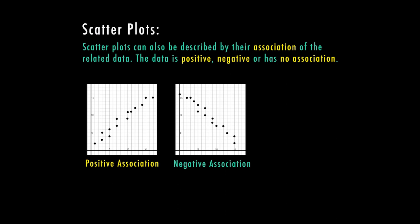So this one in the middle, the negative association, is what happened with our first example where as the price of the item increased, the number of buyers decreased.